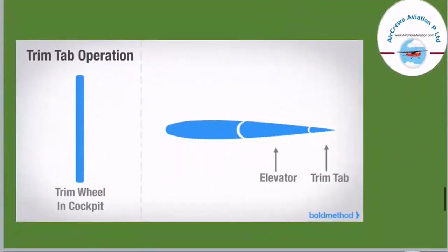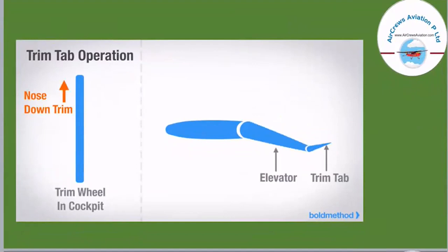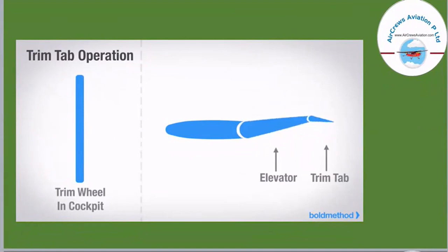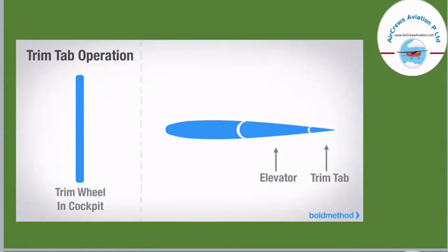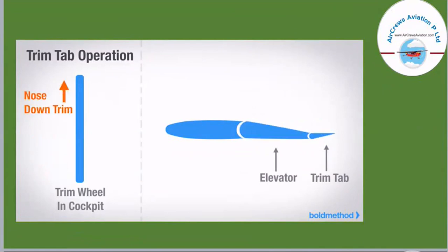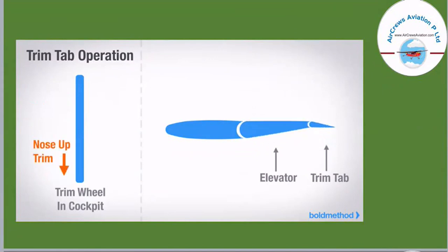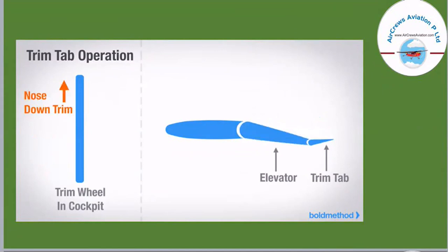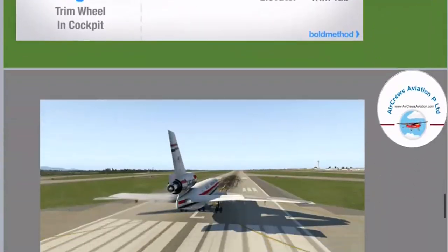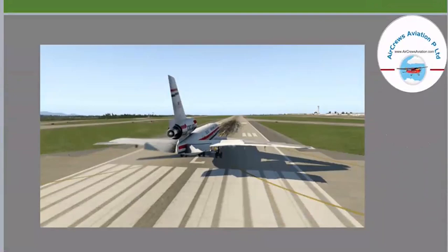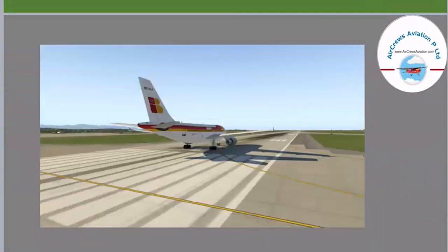The trim tab is located at the rear part of an aircraft just behind the elevator. If the elevator goes down, the trim tab goes up; if the elevator goes up, the trim tab goes down. It works opposite to the elevator and is used to ease the workload on the pilot. Here is a visual of the elevator trim tab at the tail section of the aircraft.